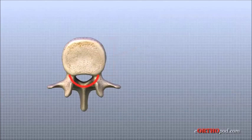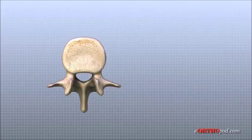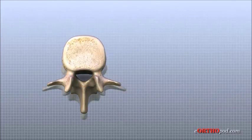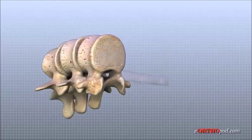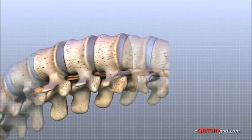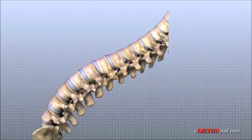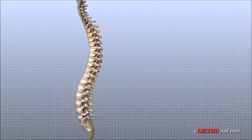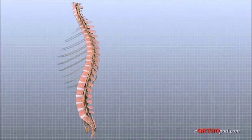A bony ring attaches to the back of each vertebral body. When the vertebrae are stacked on top of one another, these rings form a hollow tube called the spinal canal. This bony tube surrounds the spinal cord as it passes through the spine. Just as the skull protects the brain, the bones of the spinal column protect the spinal cord.